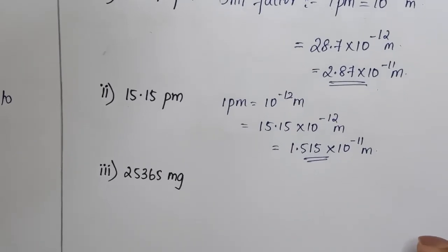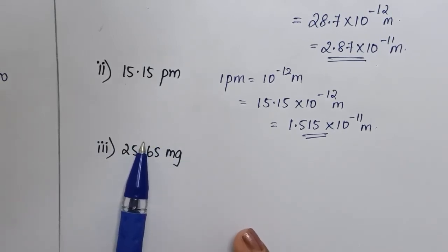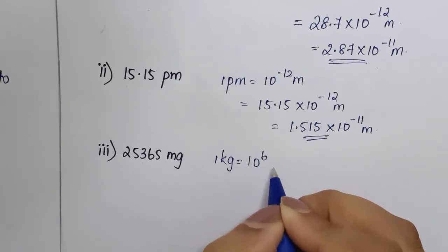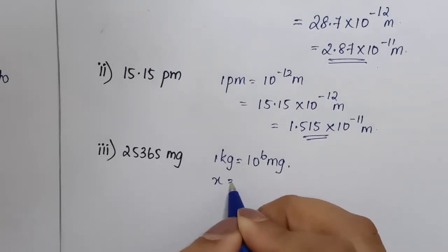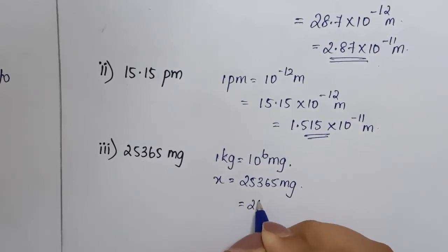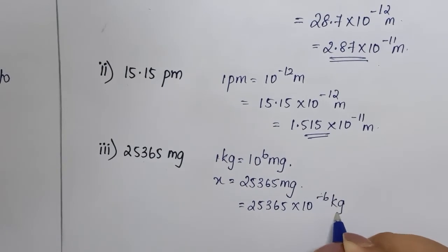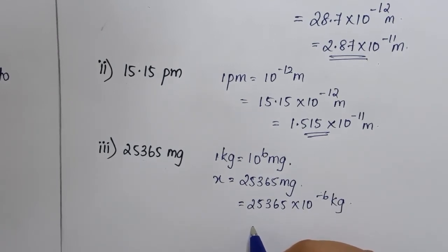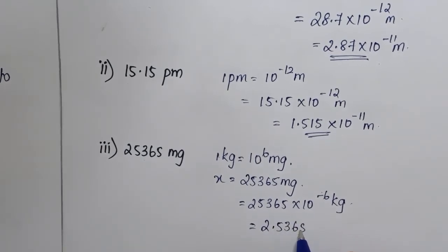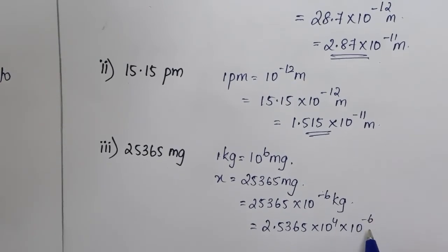Now in the third one we have 25,365 milligrams, and we need to express this in basic units. We can write that 1 kg is equal to 10 to the power 6 milligrams. Therefore 25,365 milligrams will be equal to 25,365 into 10 to the power minus 6 kilograms. When we try to shift the decimal — shifting 1, 2, 3, 4 places — this gives us 10 to the power 4 combined with 10 to the power minus 6.